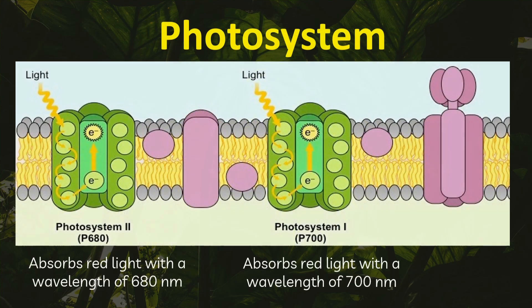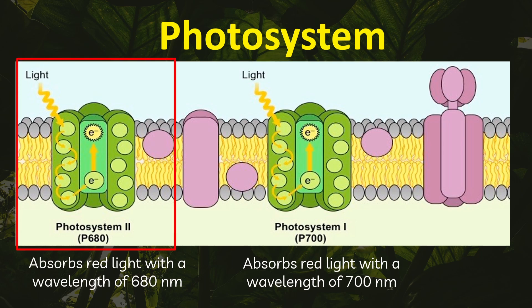There are two types of photosystems: Photosystem 1 and Photosystem 2. Photosystem 1 absorbs red light with a wavelength of 700 nanometers, while Photosystem 2 absorbs red light with a wavelength of 680 nanometers.